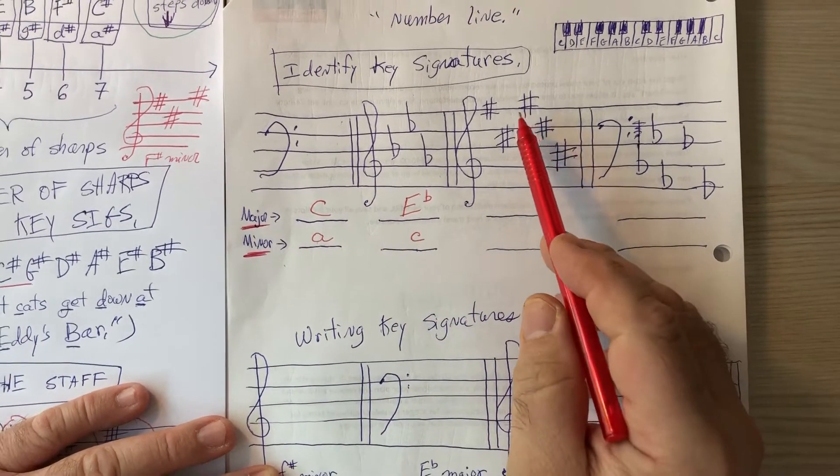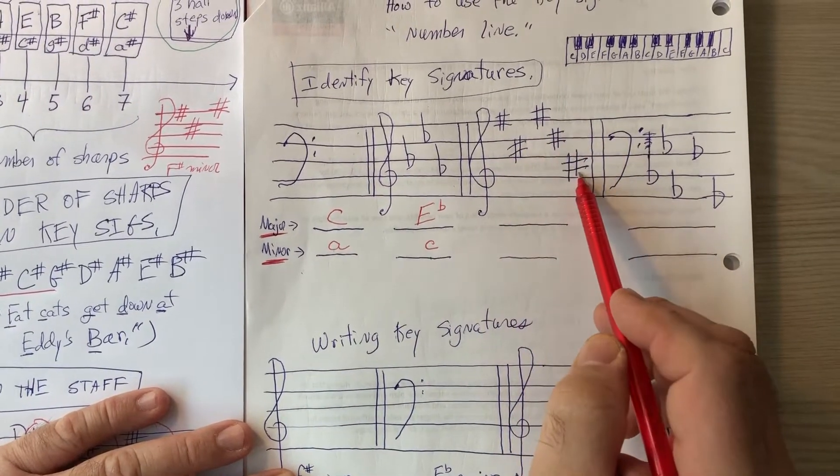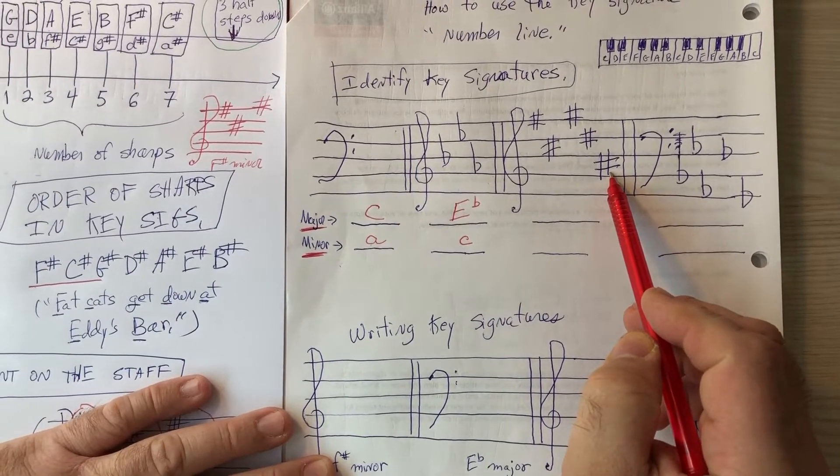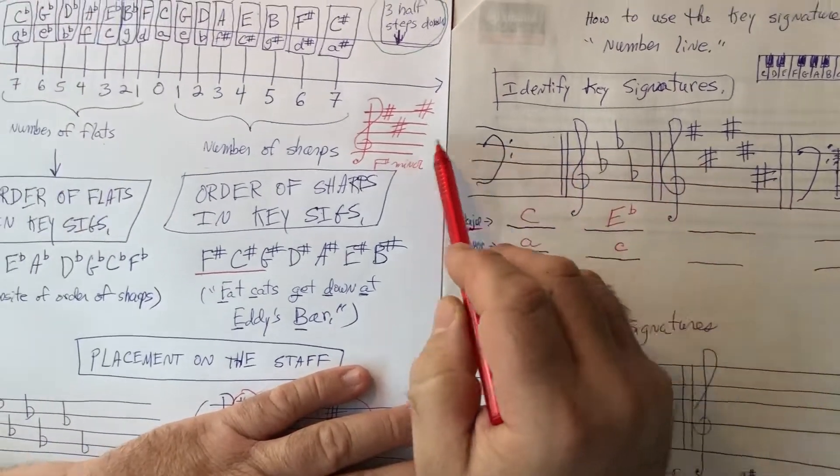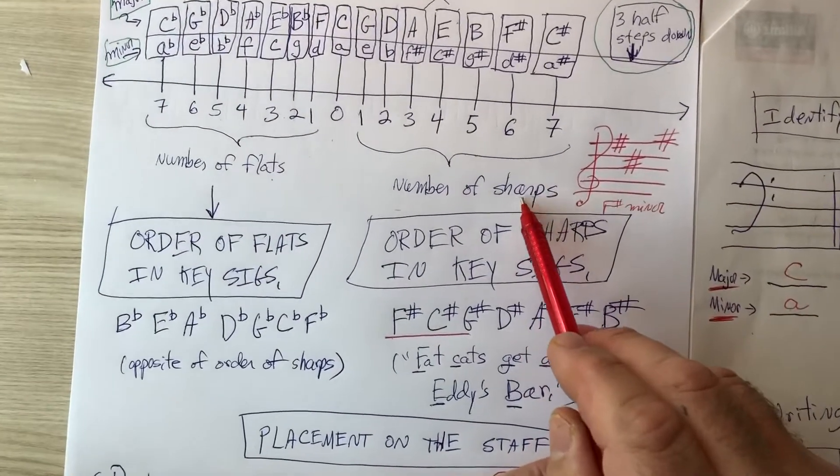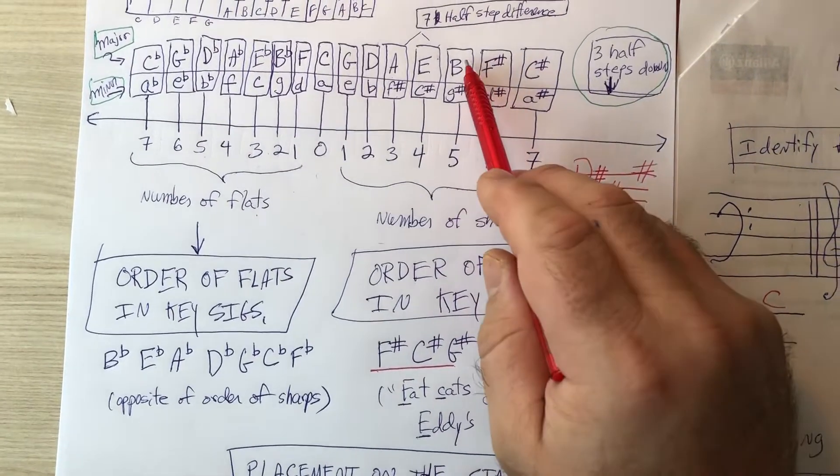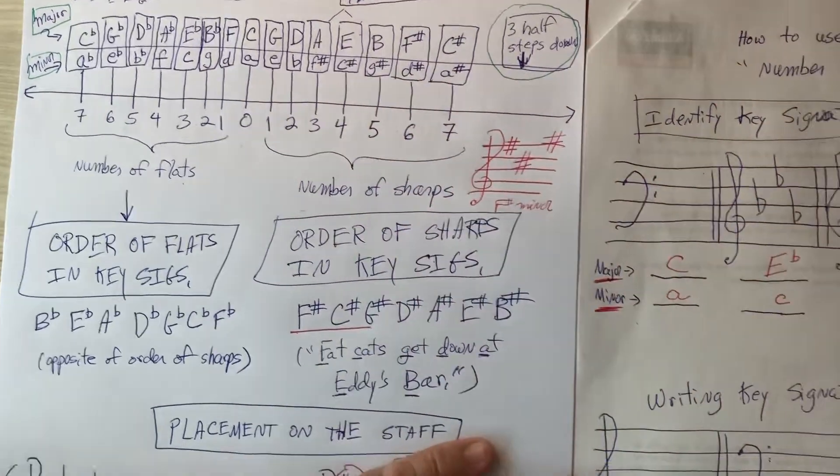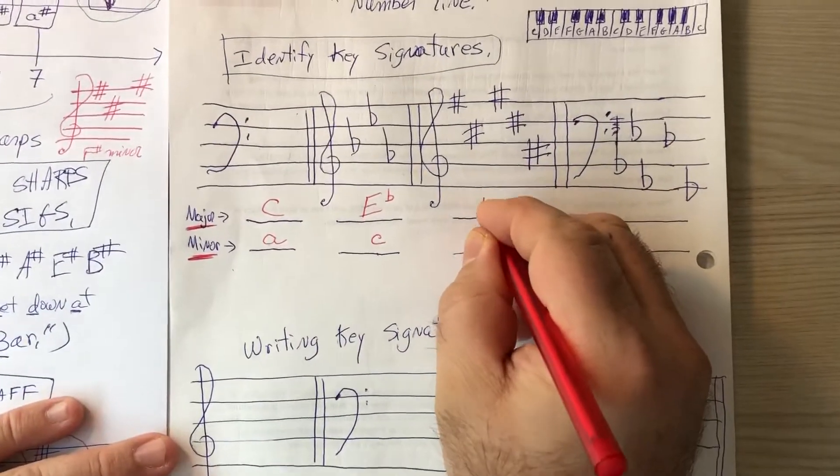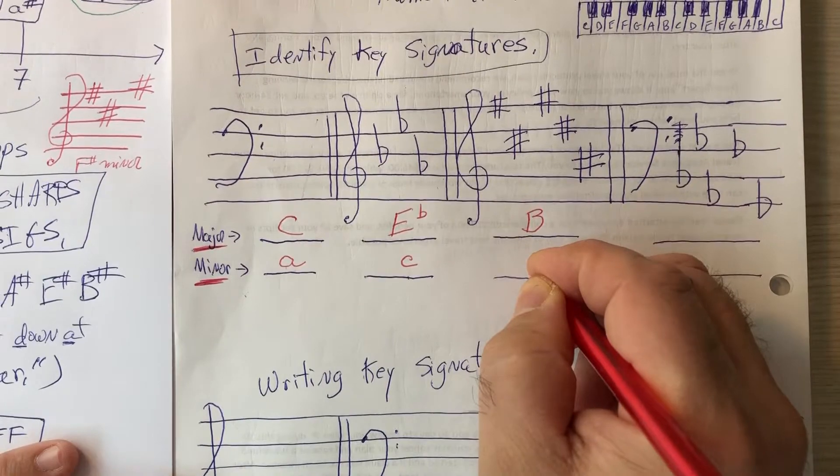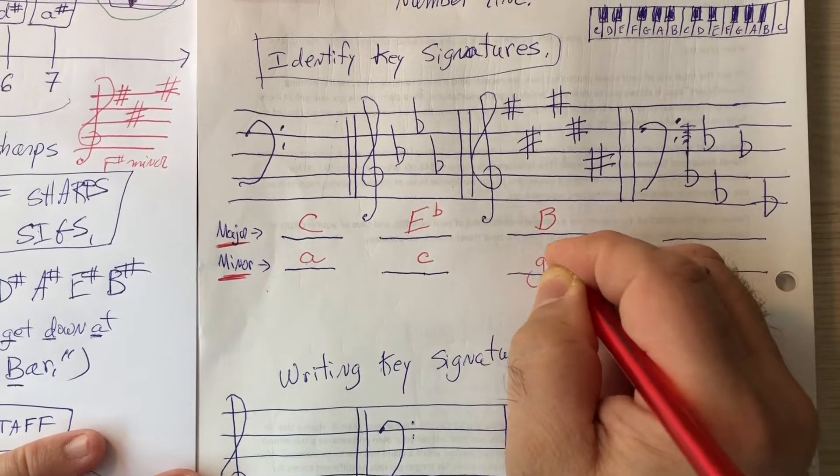Next we see we have sharps. One, two, three, four, five sharps. So we go back to our chart. First make sure to get on the right side. You're on the sharp side. We want five sharps. We see that's B major or G sharp minor. Okay, so B major or G sharp minor.